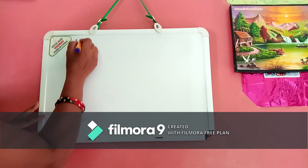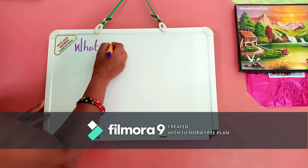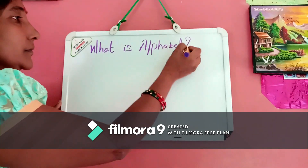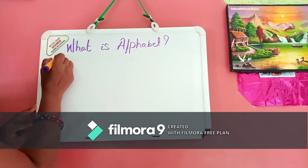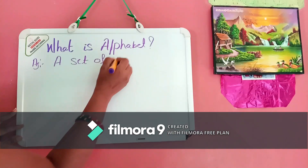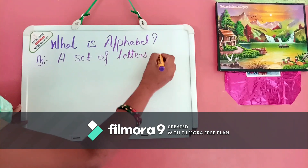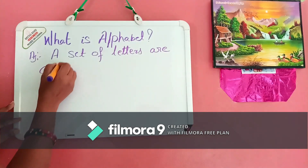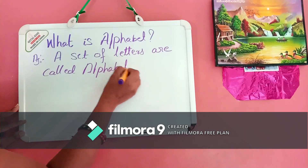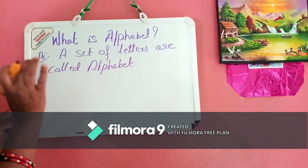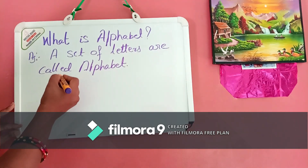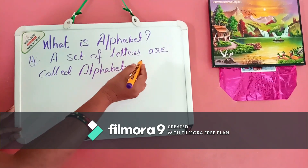What is alphabet? The answer is, a set of letters are called alphabet. It means a group of letters — 26 letters are called alphabet. This above question is useful to oral answer.